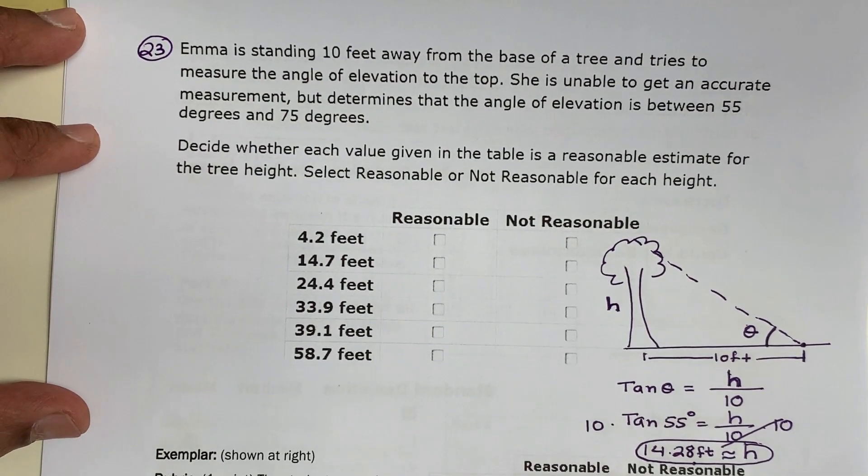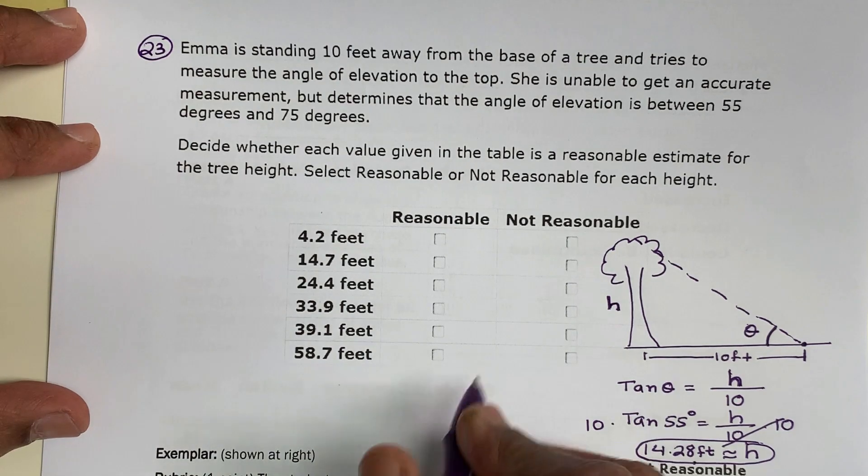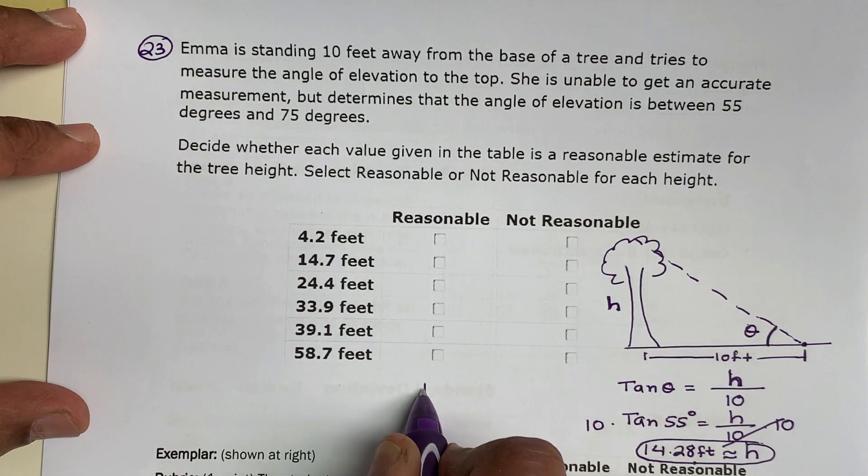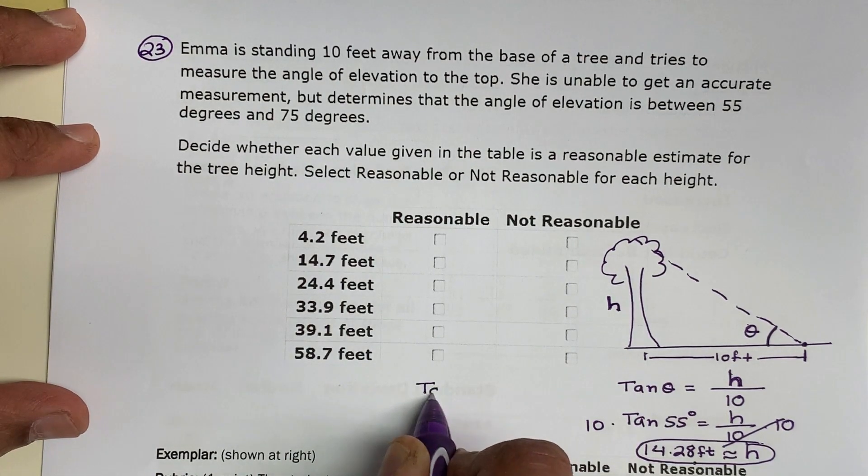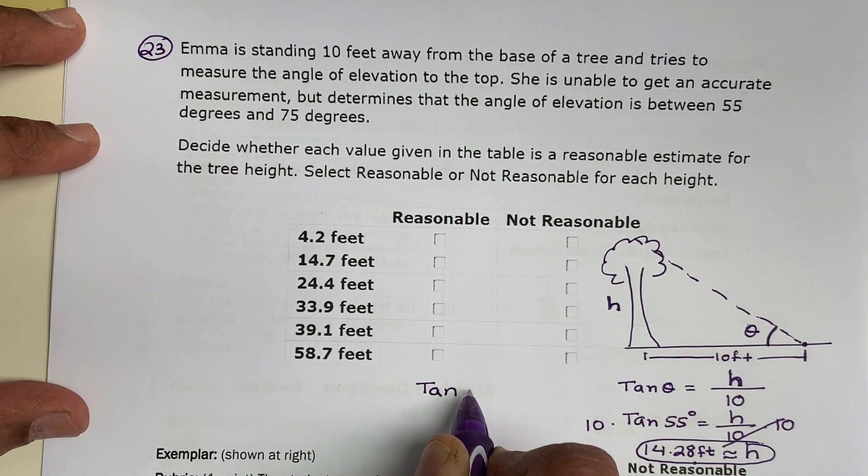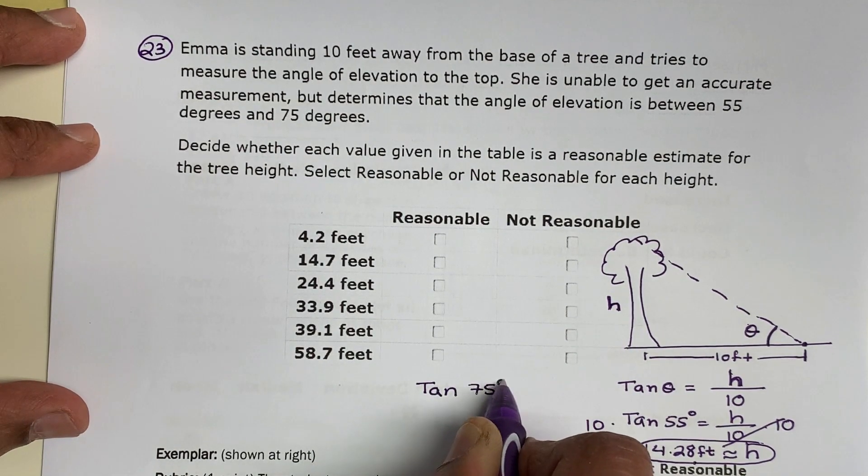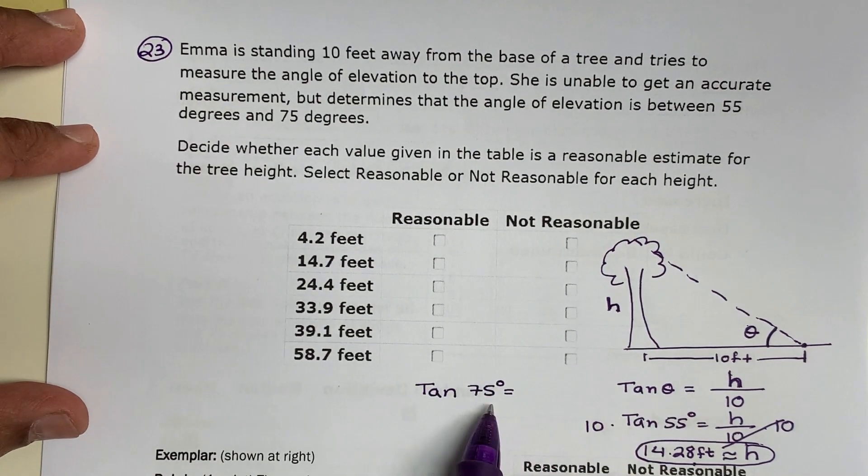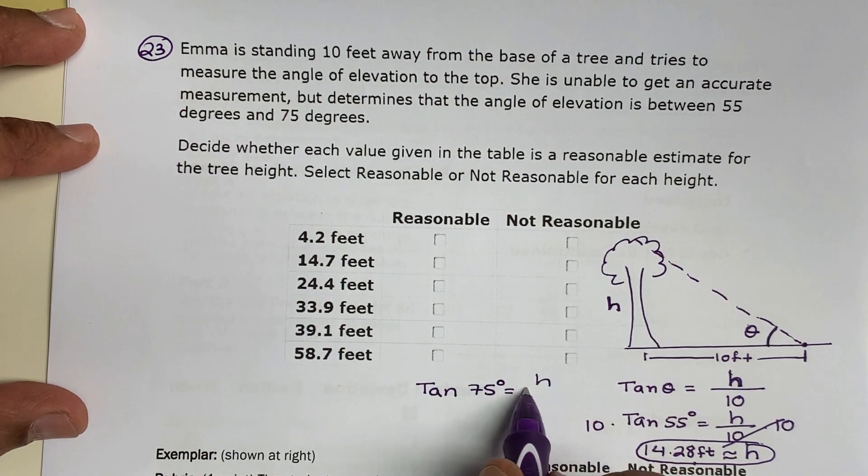Now let's see what's the other end of the answer. Same exact thing, same function. But this time, I'm going to use 75 degrees, the higher limit on the angle. Tangent 75, what if it was 75 degrees? What would be the height of the tree?